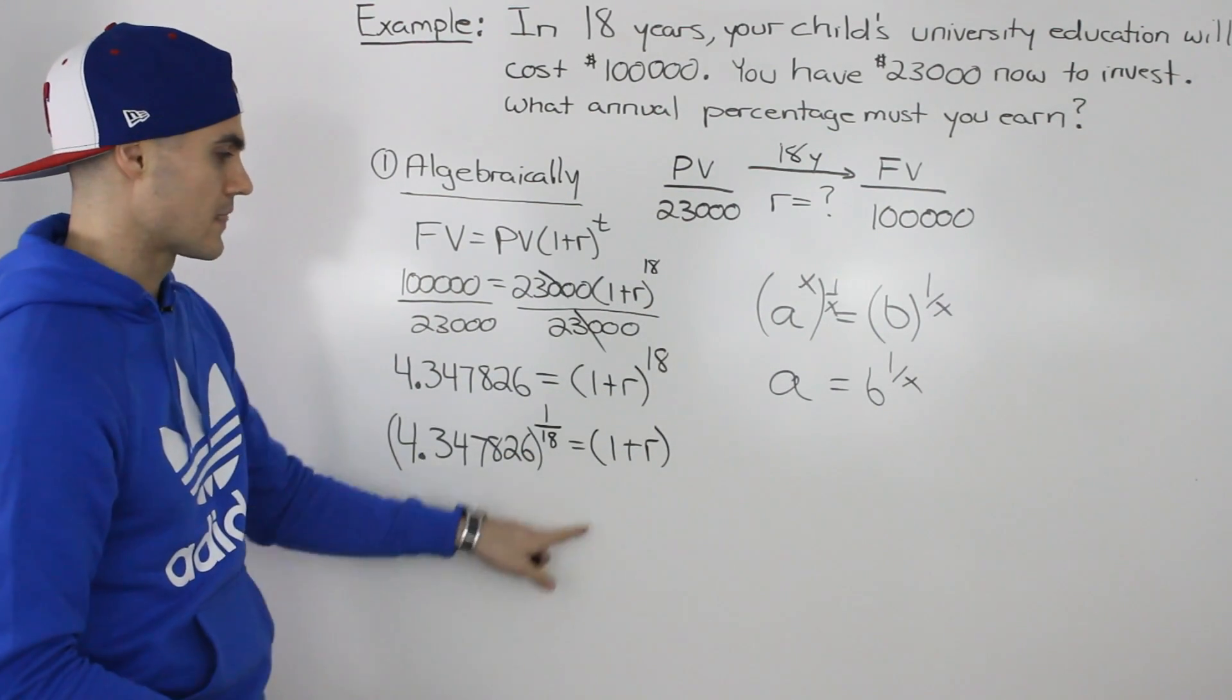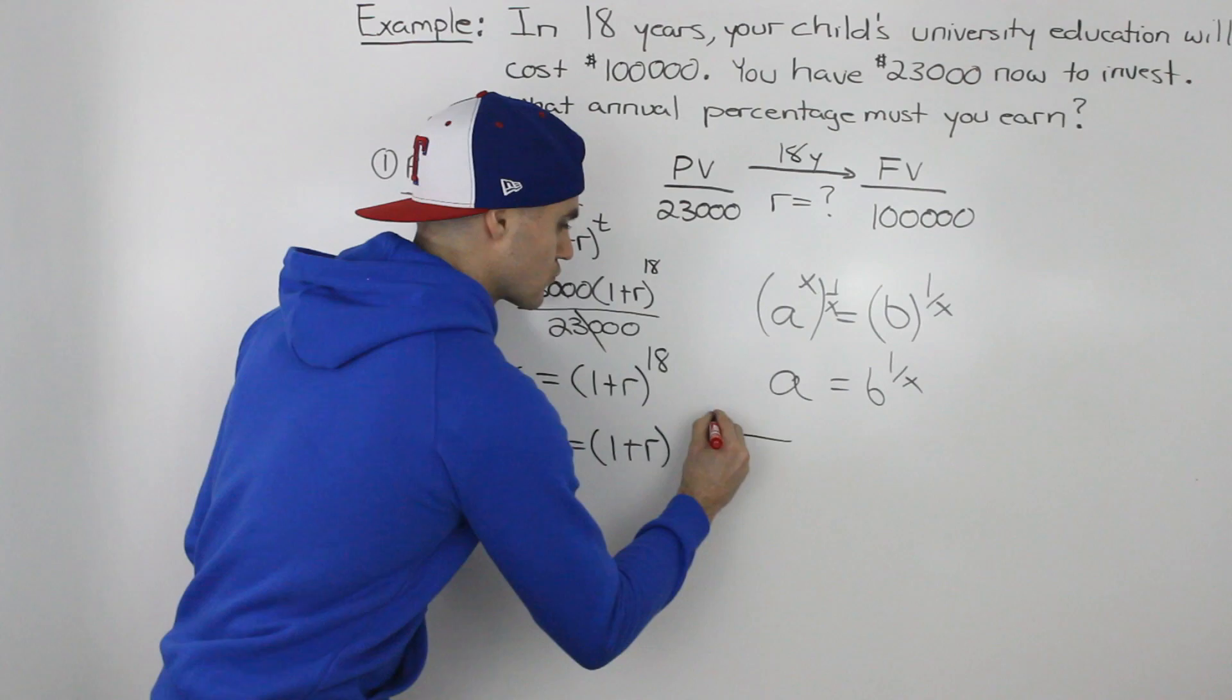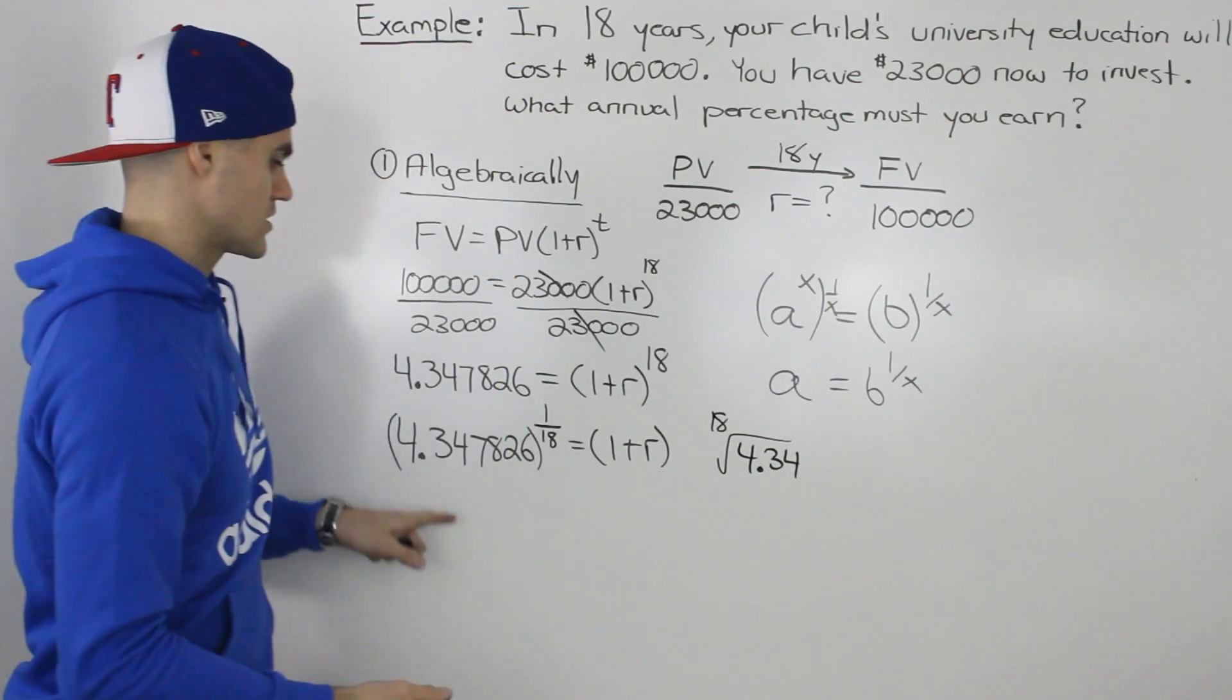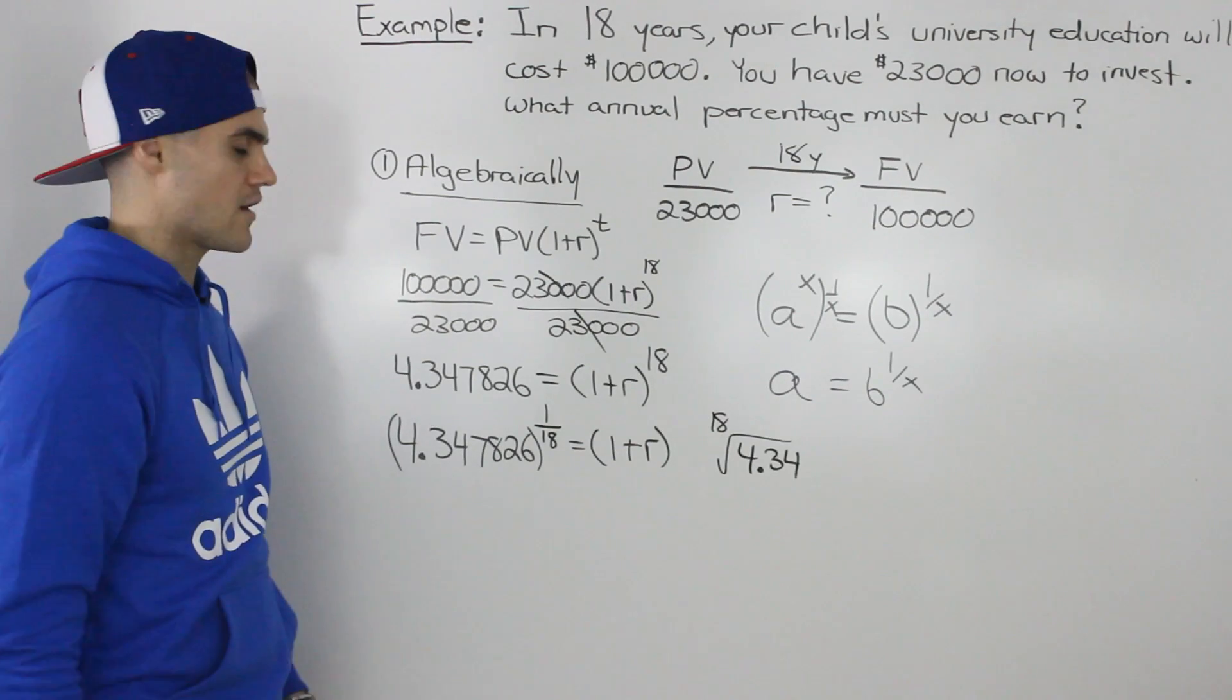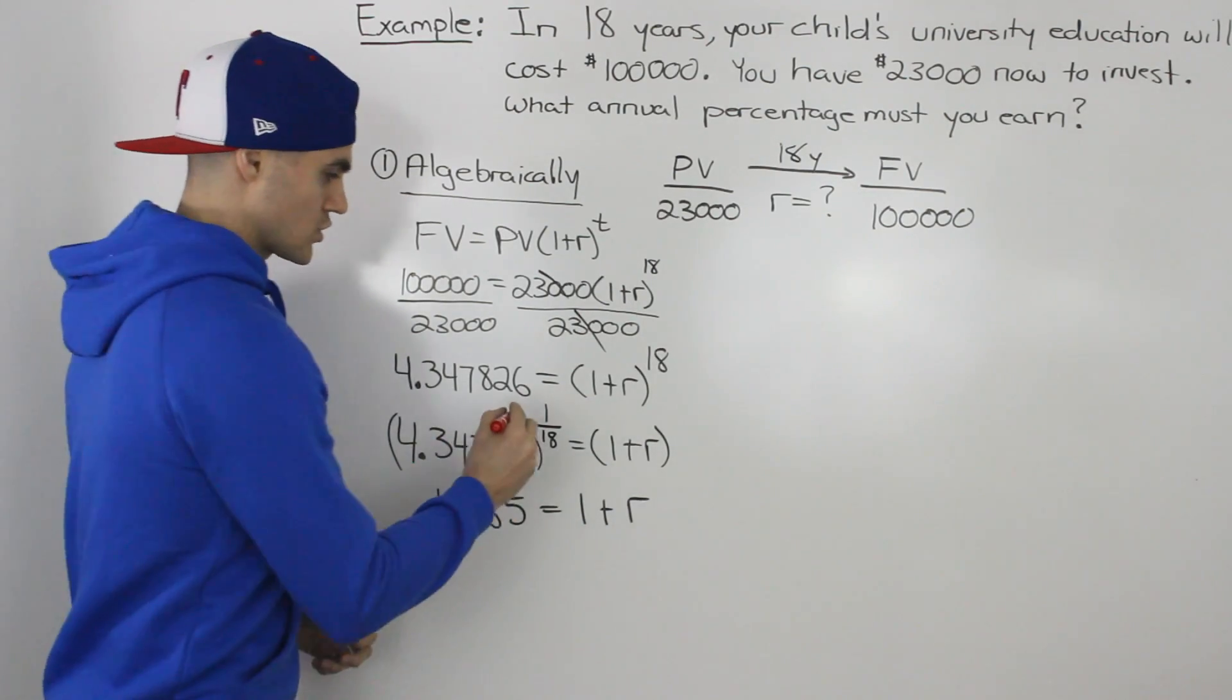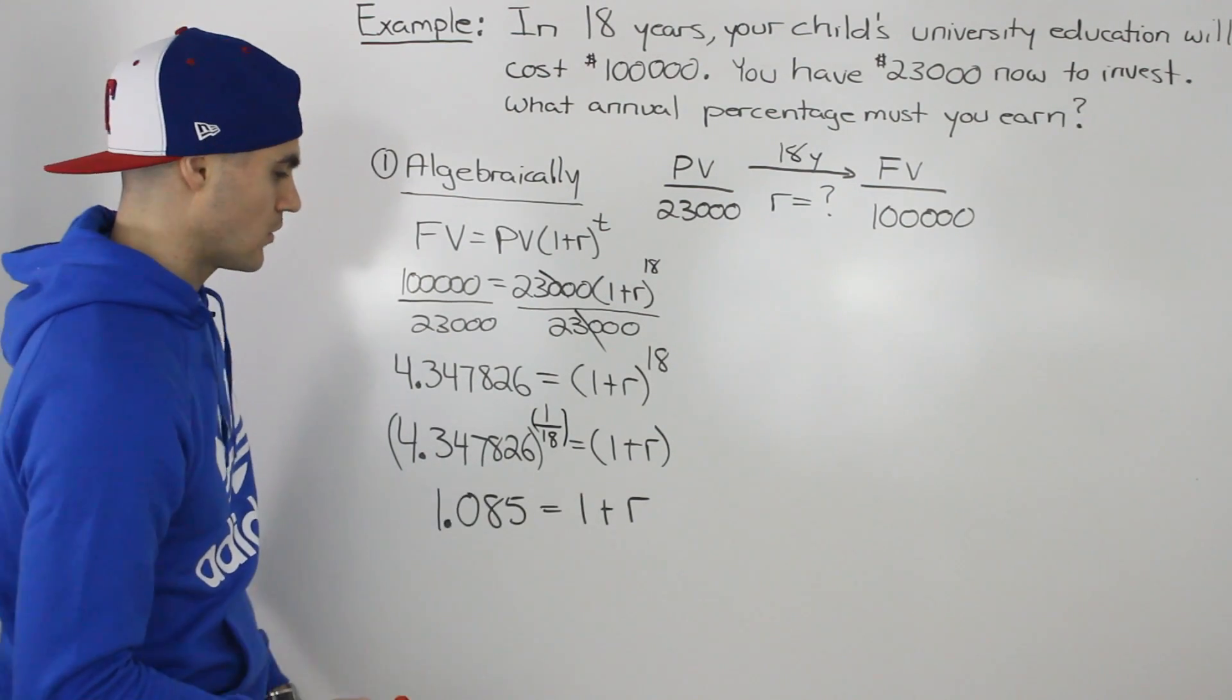Then that 1 plus R is by itself. This is actually the same thing as the 18th root of 4.347826. Something to the power of 1 over 18 or the 18th root of it are the same thing. When you take 4.347826 to the power of 1 over 18, making sure that exponent is in brackets, you get 1.085, which equals 1 plus R.